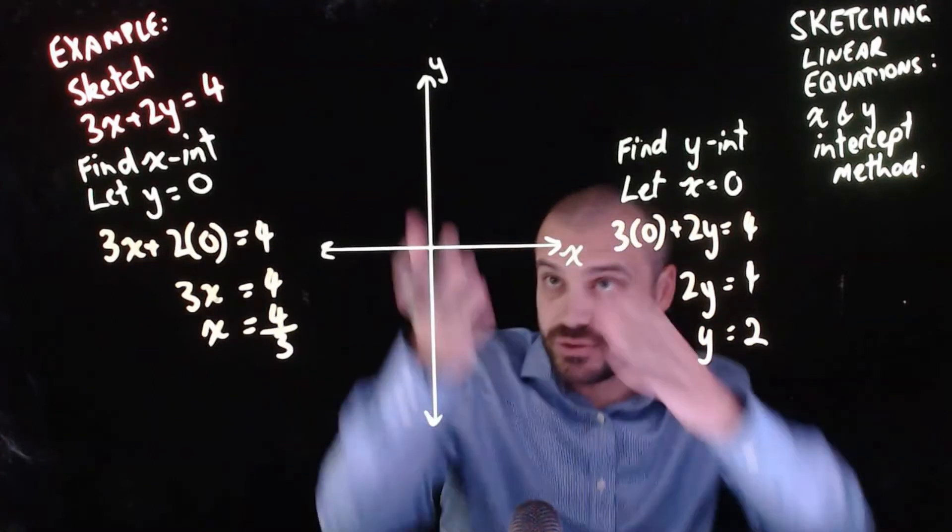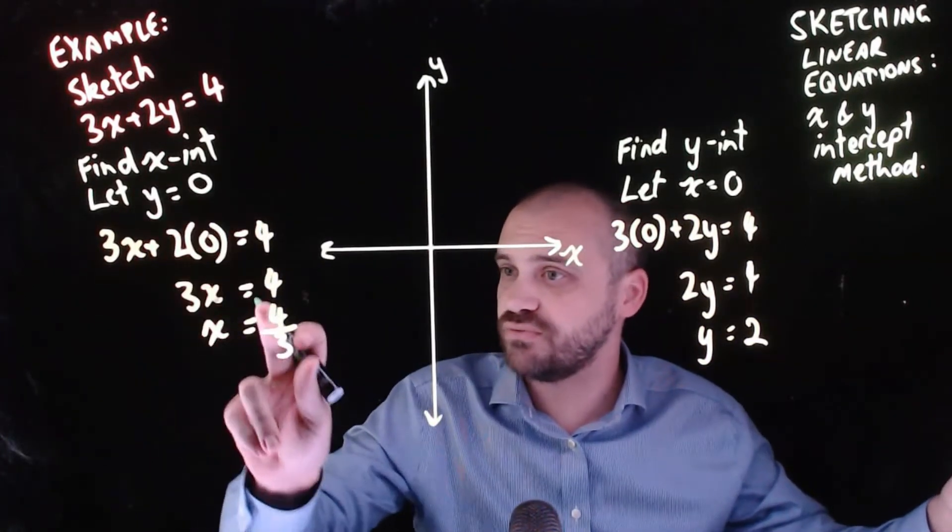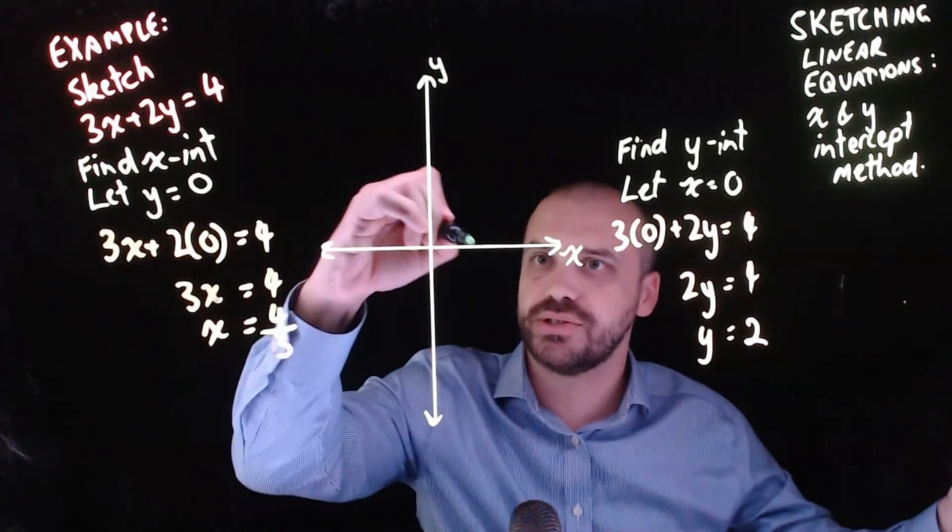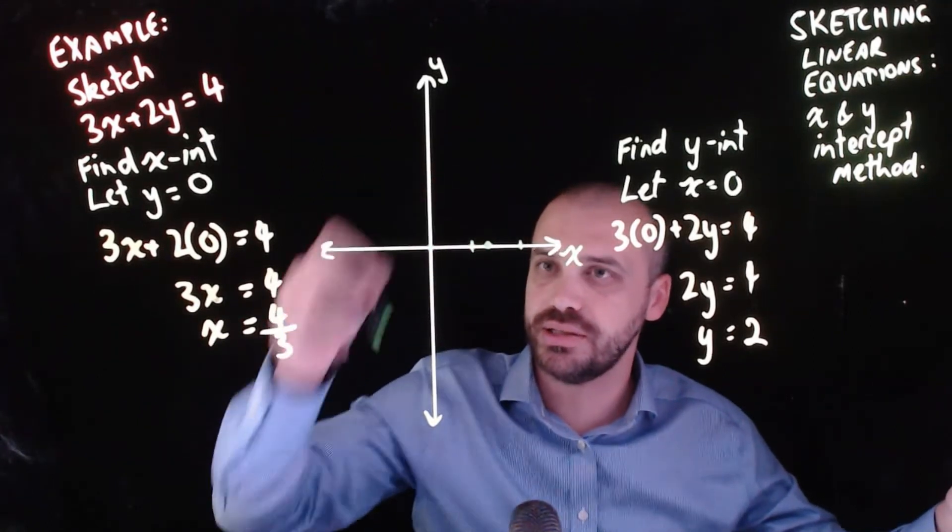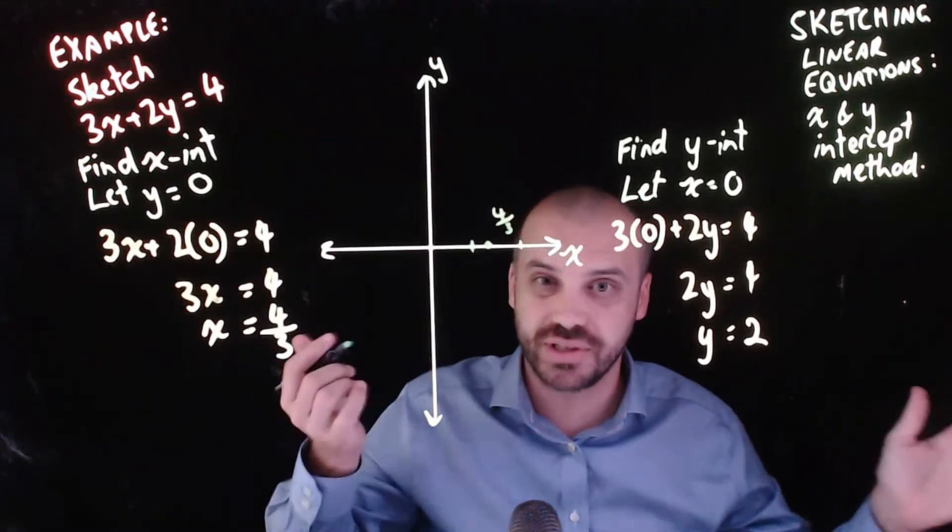Now all that's left is to sketch this. We know the x intercept is 4 over 3, which is about 1.33. I'll make this a 1, this a 2, and this mark right here is going to be 4 thirds. I'll just write 4 thirds there.